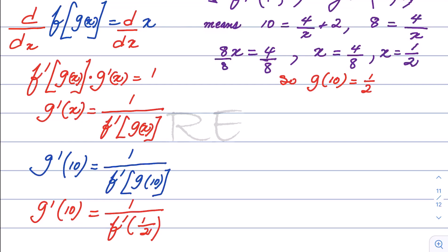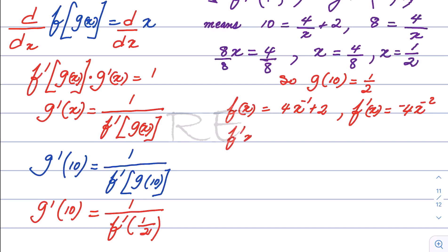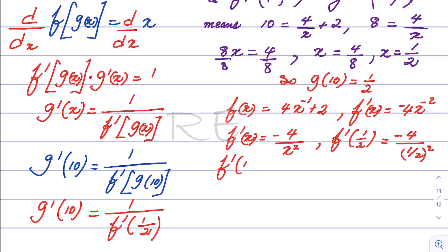We're going to find the derivative of f of x. We write f of x with a negative exponent: 4 over x is the same as 4 times x to the negative 1, plus 2. f prime of x will be 4 times negative 1, which is negative 4, times x to the negative 2. The derivative of 2 is 0, so f prime of x is negative 4 over x squared. f prime of 1 half equals negative 4 divided by 1 half squared, which is 1 fourth.